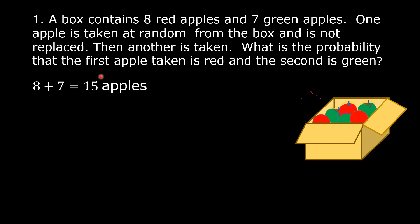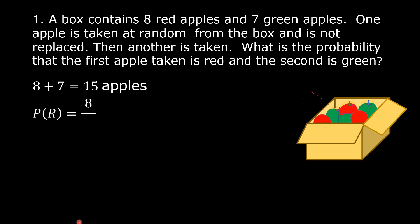There are two events in the problem. The first event is taking a red apple from the box, and the second event is taking a green apple from the box. Let us represent the first event of taking a red apple from the box by R. The probability of R is equal to the number of red apples divided by the total number of apples. There are 8 red apples and the total is 15, so the probability of R is equal to 8 over 15.